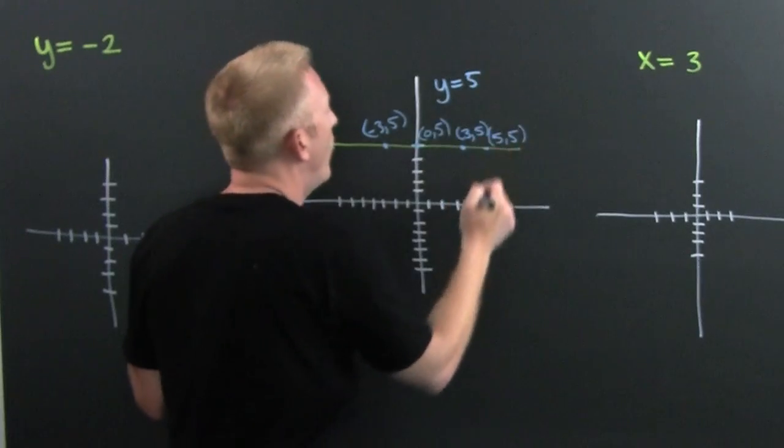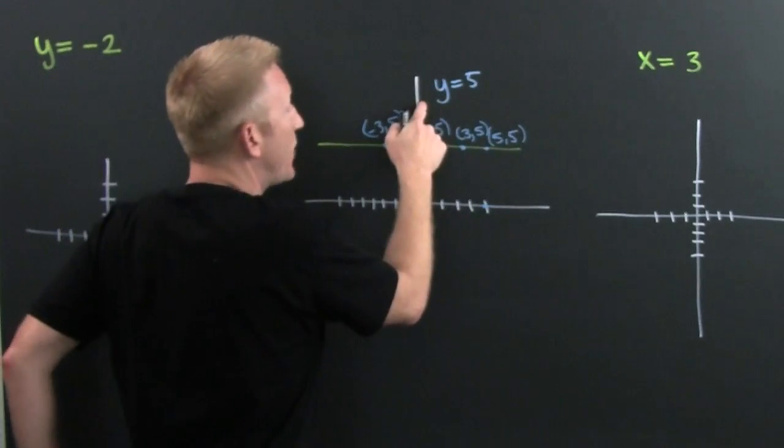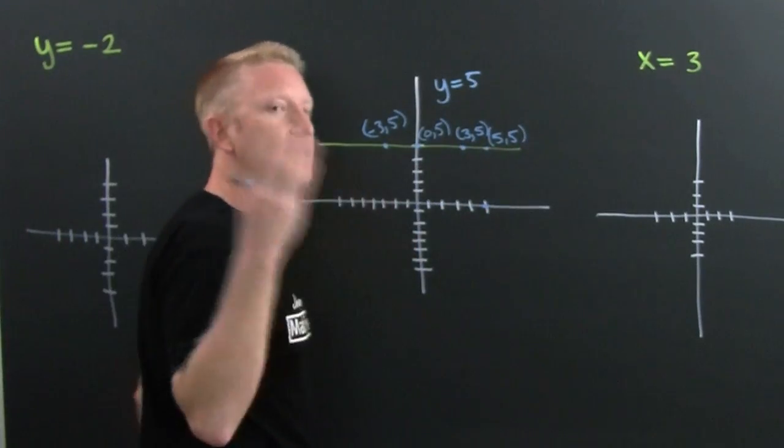You can say that y is equal to... who, who, wait a minute, that's the graph of y equals 5 because y is always 5.